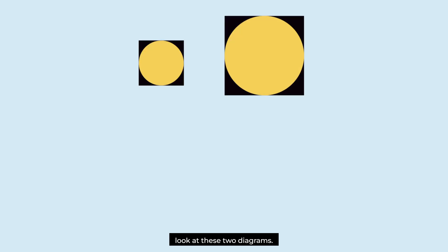Look at these two diagrams. Different sized circles are inscribed in different sized squares. Naturally, the areas of the two circles are different. But what about the proportion of each circle's area to its respective square's area? Let's calculate it.